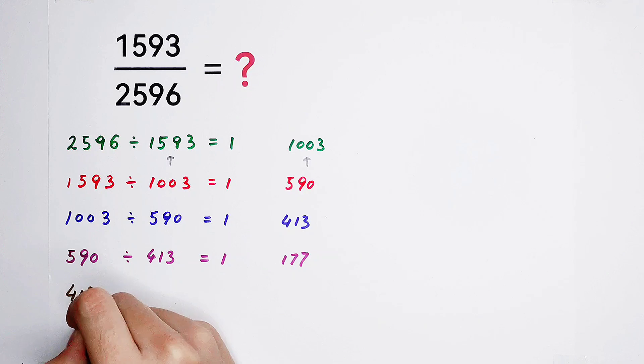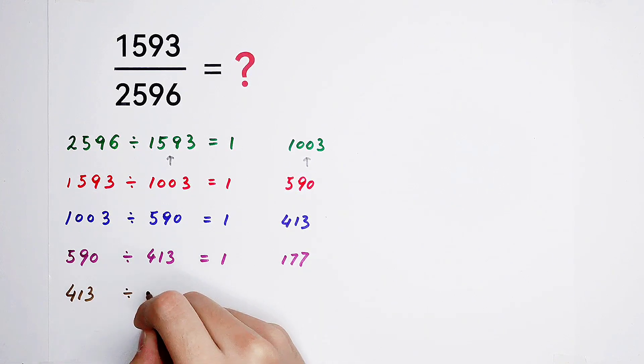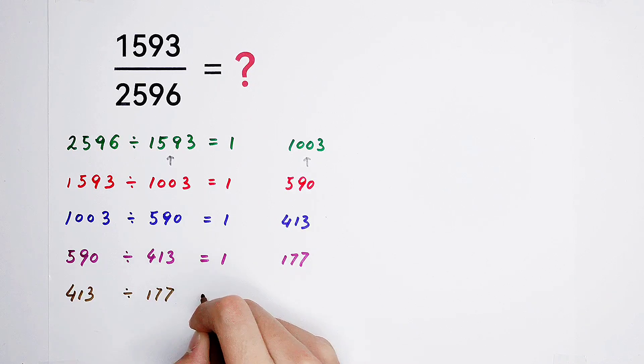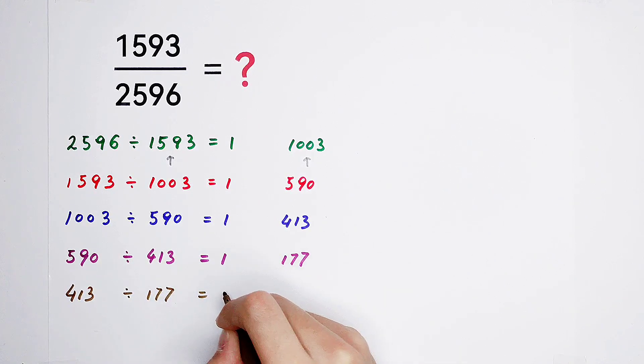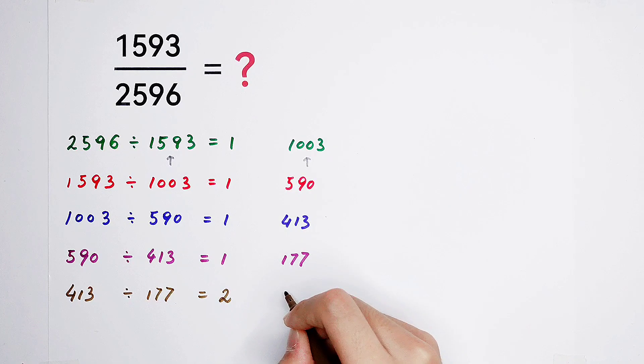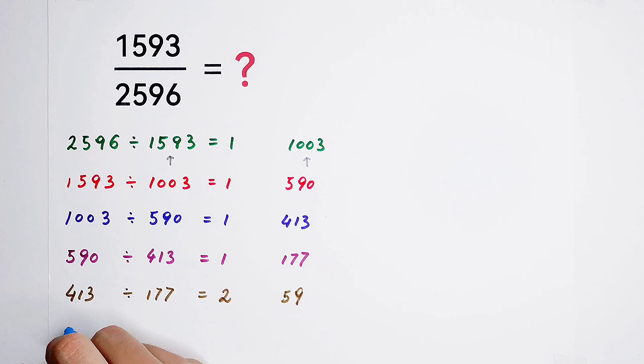Then, 413 divided by 177. It is 2, remainder 59. Then, 177 divided by 59.